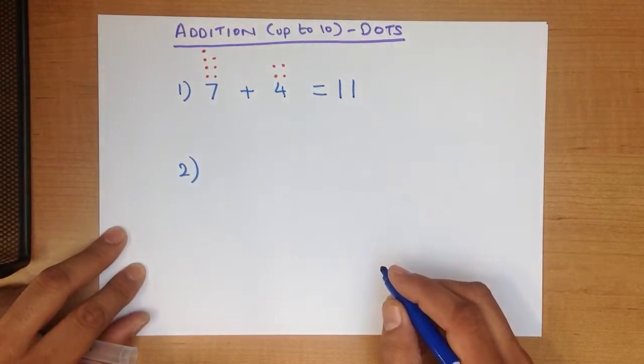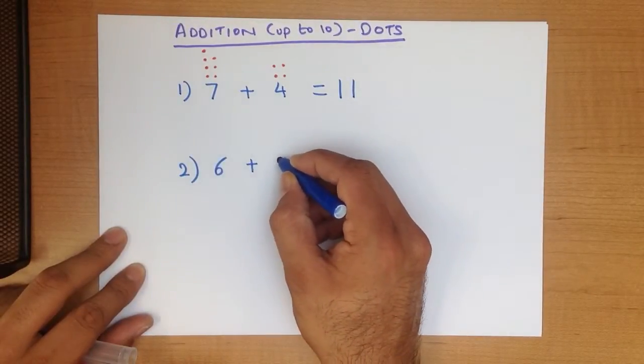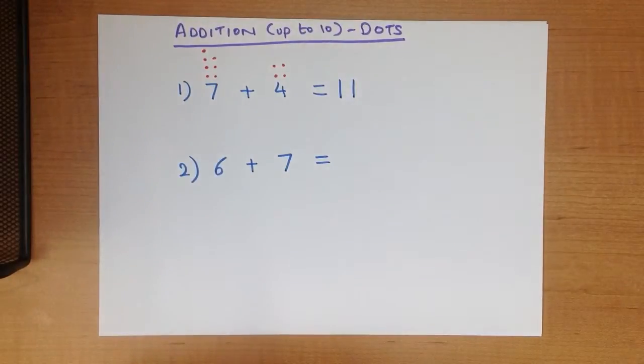Let's work through another one. What is 6 plus 7? 6 plus 7.